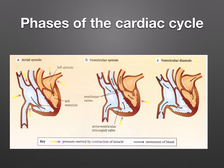The heart undergoes a sequence of events that is repeated in humans around 70 times each minute when at rest. This is known as the cardiac cycle. There are two components to the beating of a heart: diastole, which is relaxation, and systole, which is contraction. Systole occurs separately in the ventricles and atria, so it's described as two phases. But diastole takes place simultaneously in all the chambers of the heart, so it's treated as a single phase.